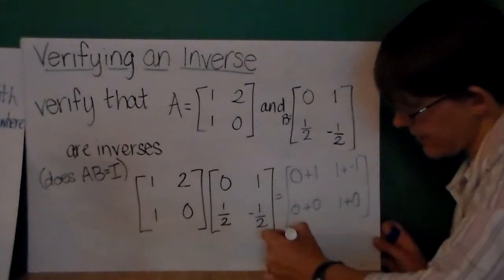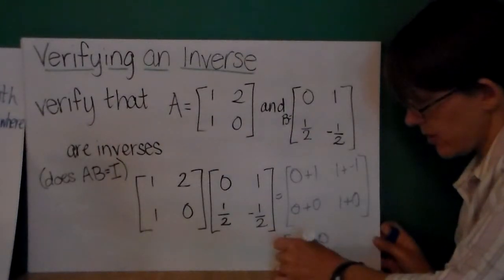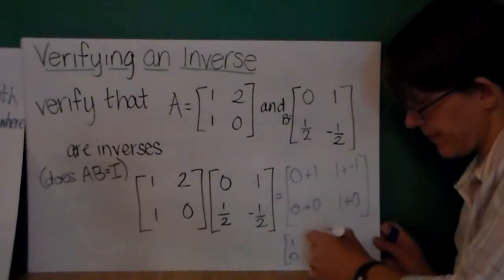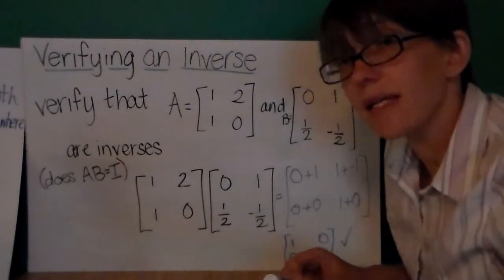So simplifying this, I get [1, 0; 0, 1]. So this is the identity matrix.